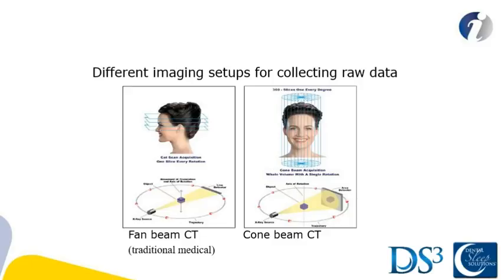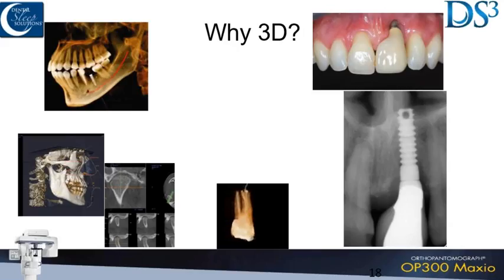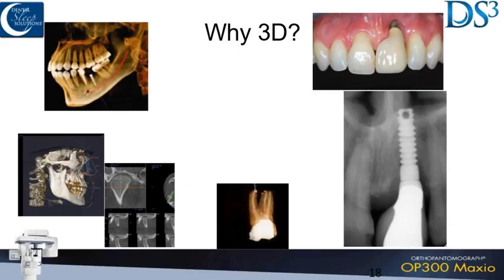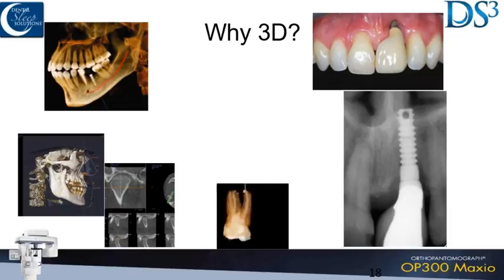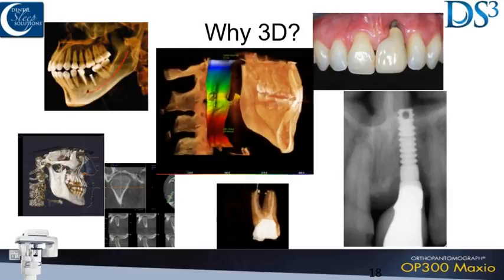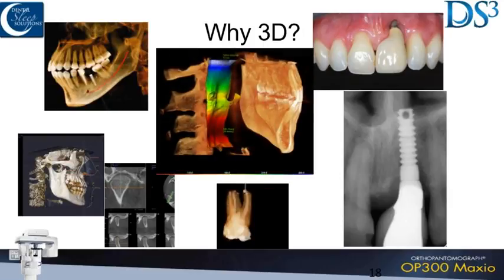Dental cone beam actually images hard tissues better than a medical CT would. That's why it's less radiation — because of the way it works. We get a really great image where we can even see soft tissue a little better, and we're not going to be giving patients a lot of unnecessary radiation.